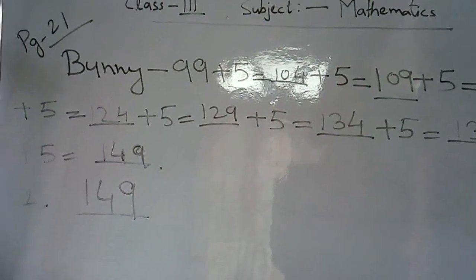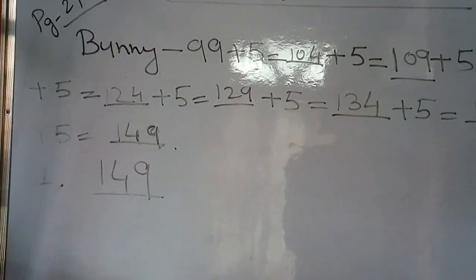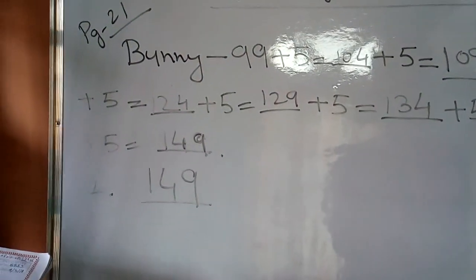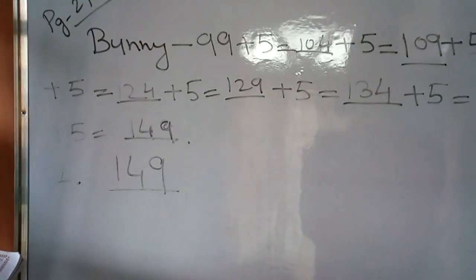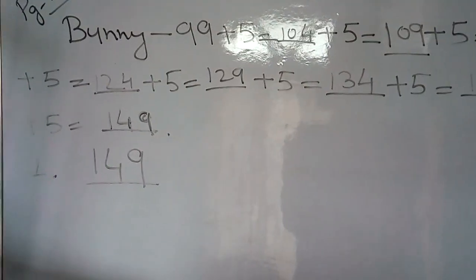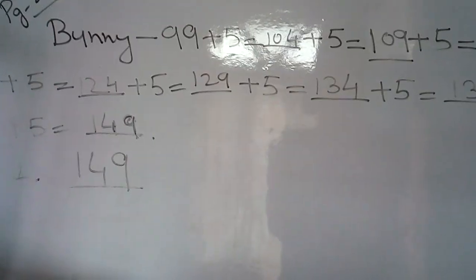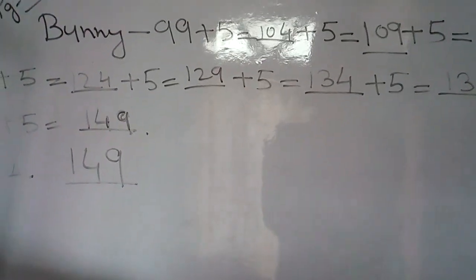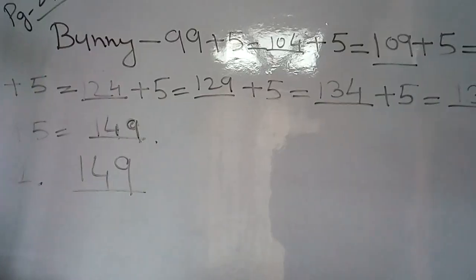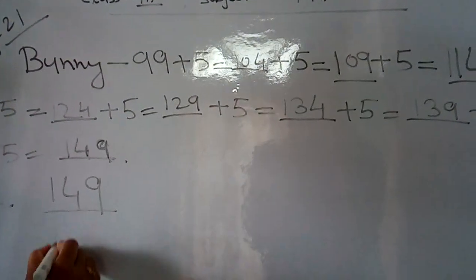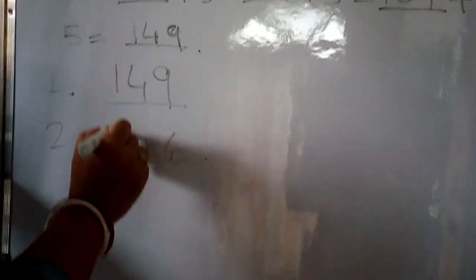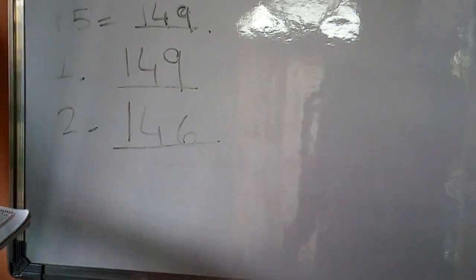Similarly, Taru's 10th jump is on number dash. Taru is starting from 106 plus 4. So you will add 106 plus 4. After that 110, again 110 plus 4 gives 114, again 114 plus 4 gives 118. Like this way, you will add plus 4 repeatedly up to the 10th number. You will get the answer at the 10th number as 146. So the second answer is 146.